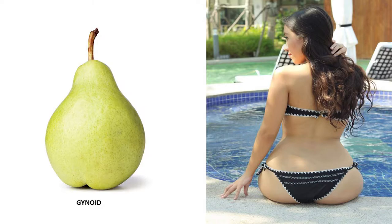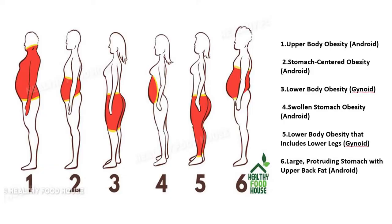And then this is a traditional female gynoid structure with high subcutaneous fat. If you go into detail, there are so many fat distribution types: upper body obesity, stomach-centered or stomach obesity, or upper body obesity. In the gynoid, there is lower body obesity.